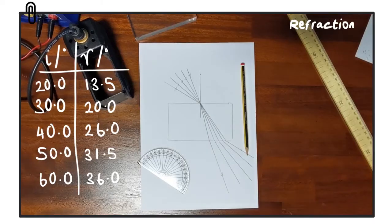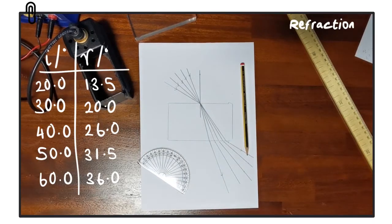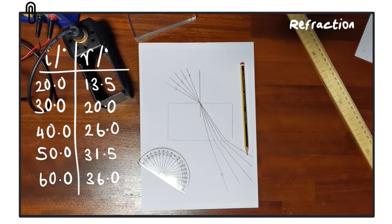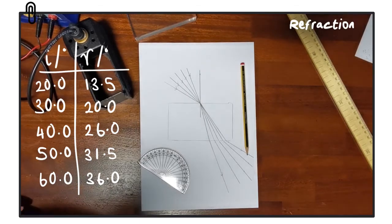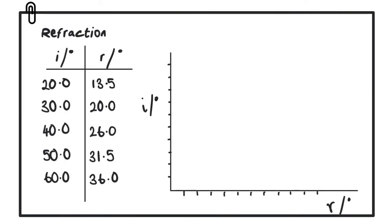So now that we've collected that data, we can have a look and see how we can determine what the relationship is between the angle of incidence and the angle of refraction. The next step will be to plot this information onto a graph. What we want to do is put the angle of incidence on the y-axis against the angle of refraction on the x-axis.